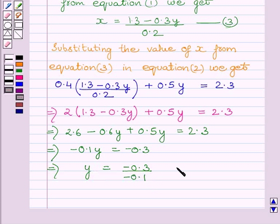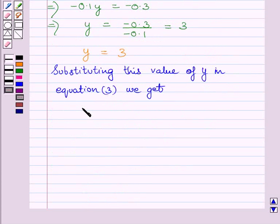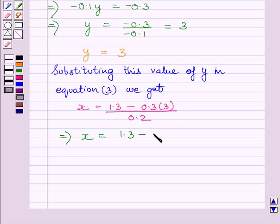Now substituting this value of y in equation 3 we get x is equal to 1.3 minus 0.3 multiplied by 3 upon 0.2, which is further equal to 1.3 minus 0.9 upon 0.2.